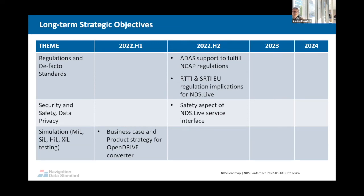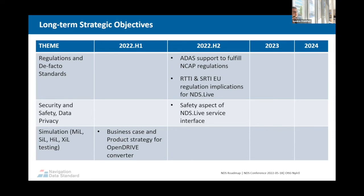Regulation is a very important topic and a key driver. Next month in June, there will be nine new EU regulations mandated — only one of them is ISA, for example. We need to look into the requirements of these regulations, not only the ones mandated from next month, but also new regulations like real-time traffic information and safety-related traffic information, which are becoming a mandate from next year on. That's why we need to check this from the product strategy point of view in NDS Live.